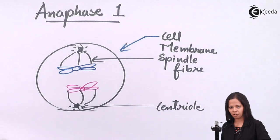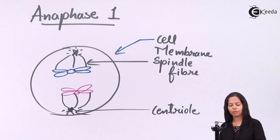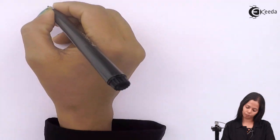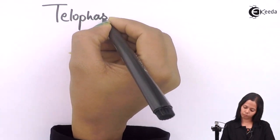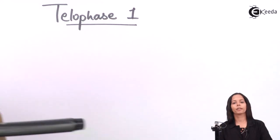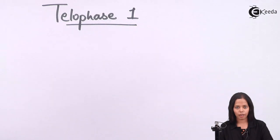Now let's see what happens in telophase one. I'm drawing a diagram - observe it carefully and make out what is the difference between anaphase one and telophase one.